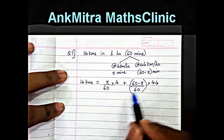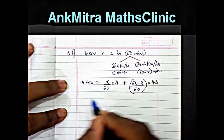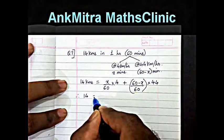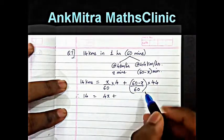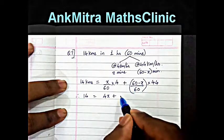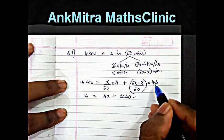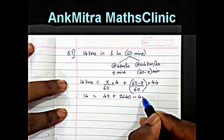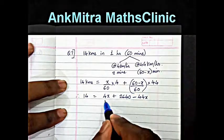Now we will simplify this equation and find the answer for x. Therefore, 14 is equal to 4x plus 44 into 60 is 2640 minus 44 into x is minus 44x, and the common denominator is 60 for both.